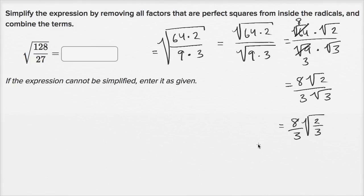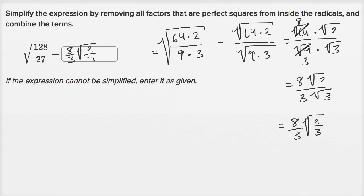So these are all possible ways of tackling this. Have we removed all factors that are perfect squares from inside the radicals? Yes. And we've combined terms — we weren't doing any adding or subtracting here, so it's really just removing the perfect squares from inside the radicals, and I think we've done that. So we can say this is 8 thirds times the square root of 2 thirds. There are other ways you could express this equivalently, but hopefully this makes some sense.